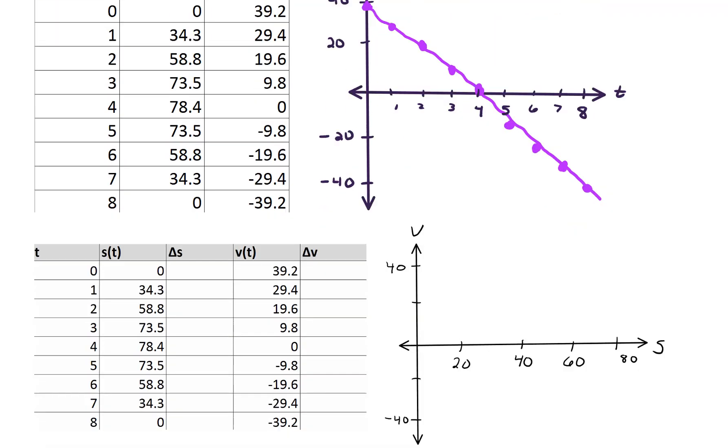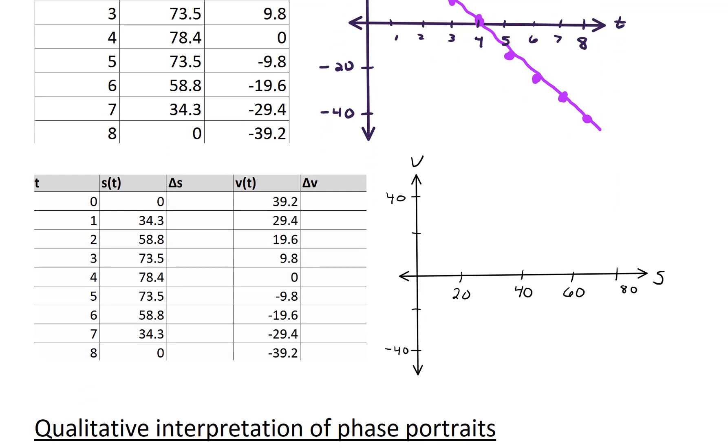So now let's take a look at the phase portrait for this system. So in this plot, we're going to be plotting our position and our velocity. Let's start there. At time equals 0, our position is 0 and velocity is 39.2. We'll put a dot right there. And our next data point is when position is 34, our velocity is a little bit less, it's about 29.2. When our position is 58.8, velocity is 19.6. And if we connected the dots, what we get is we get the trajectory of our initial condition.